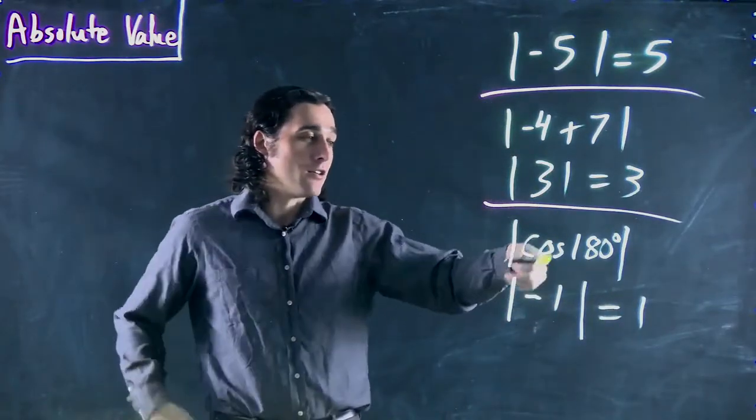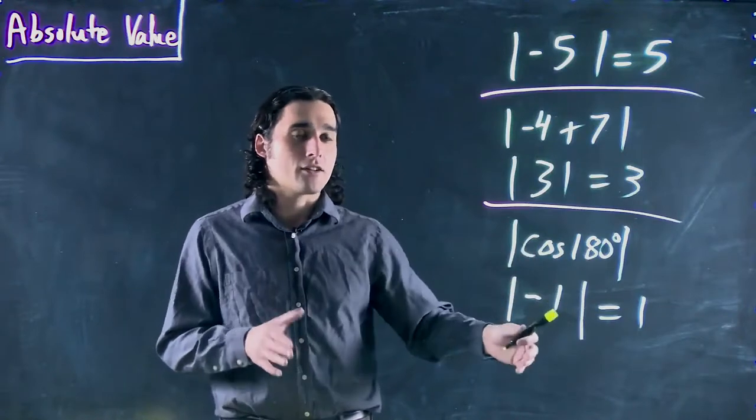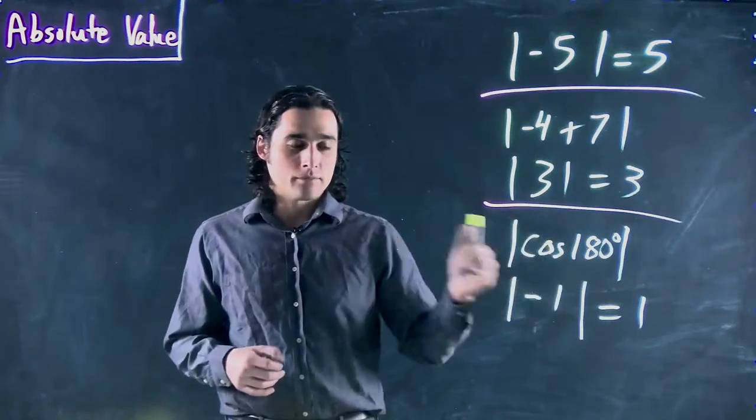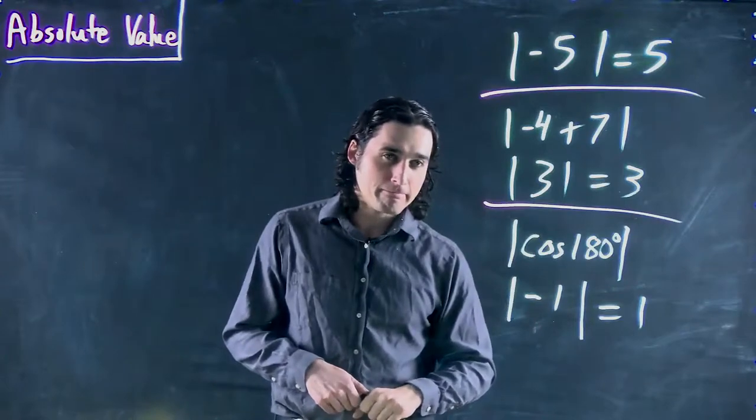Well, absolute value of minus 1 is just 1. That's why it's so important to evaluate it first. We wouldn't just want to say it's the positive value of cos of 180. No, no. We have to know what cos of 180 is first.